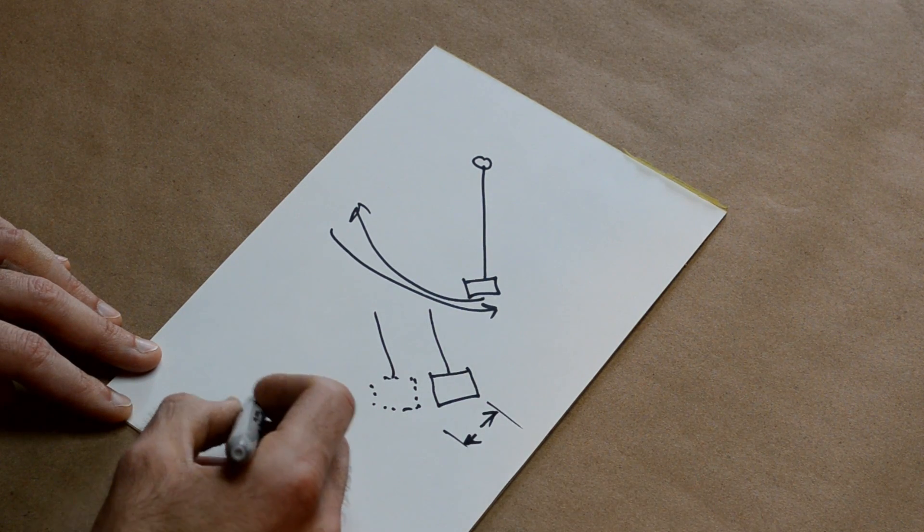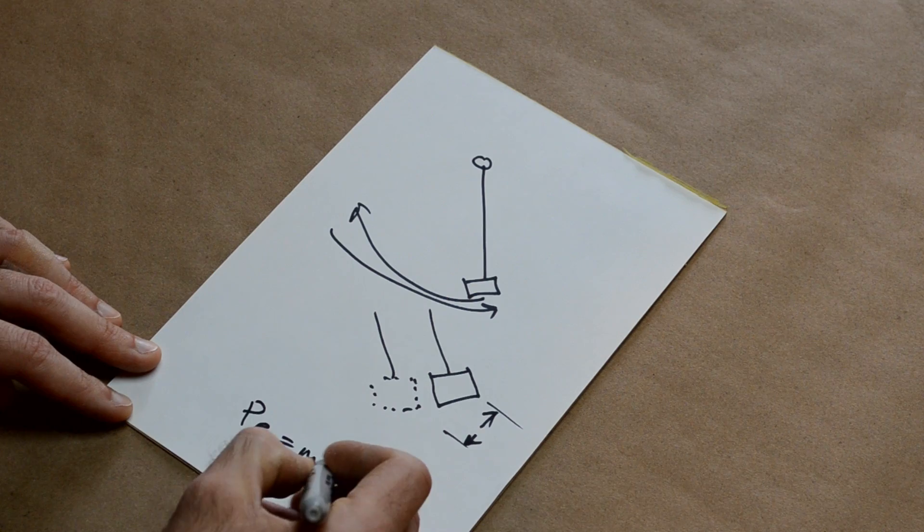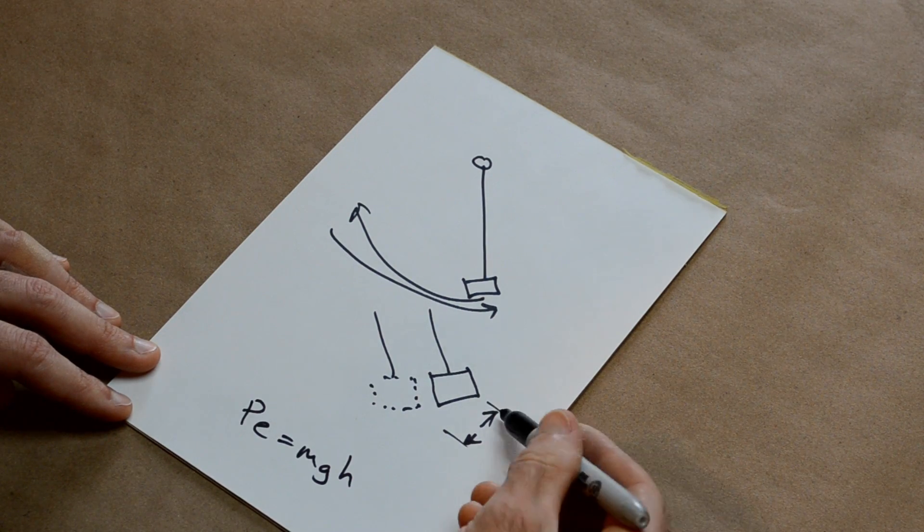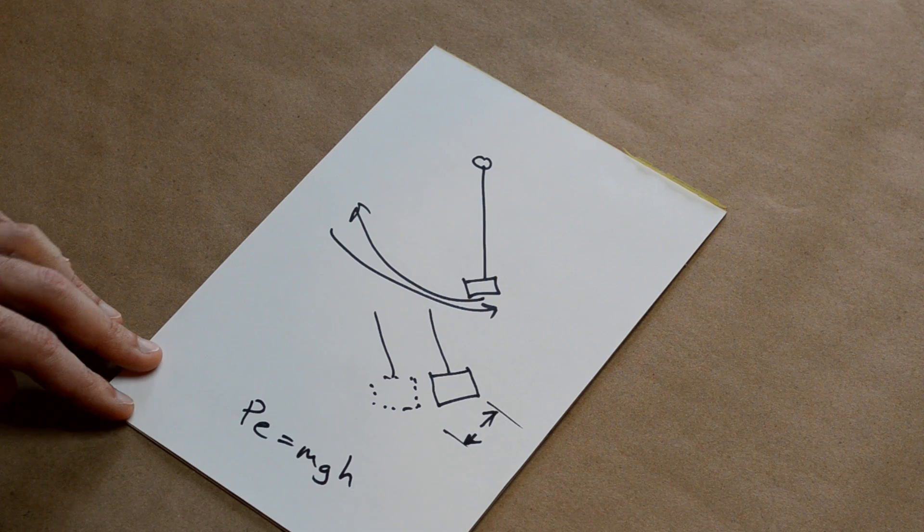Then we can use potential energy, which is just mass times gravity times height, to figure out how much energy was used during that swing.